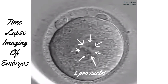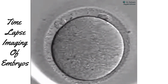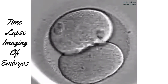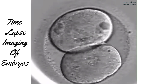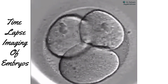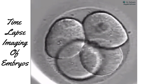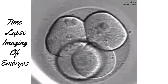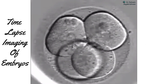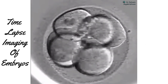First we will see the fertilization happening, which is identified by the presence of two pronuclei. Furthermore, around the second day there is division of the embryo to the four-cell stage. Subsequently the embryo growth continues and around the third day it proceeds to the eight-cell stage.